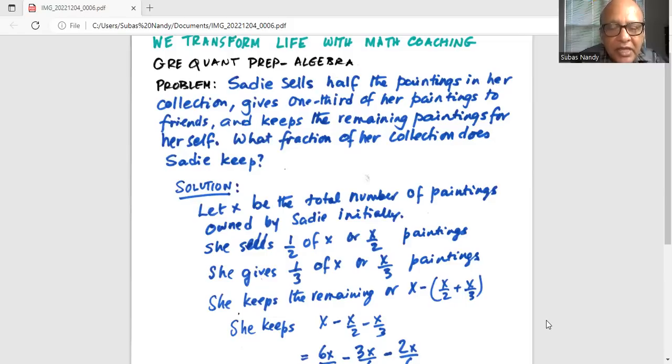She keeps X, which was our initial total number of paintings, minus the quantity she sells, which is X over 2 in parenthesis, plus she gives X over 3 paintings, that also in parenthesis.